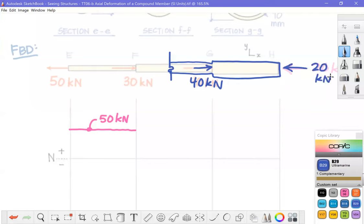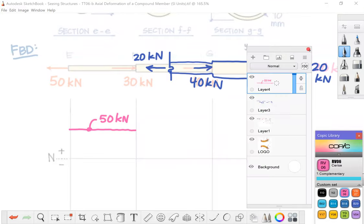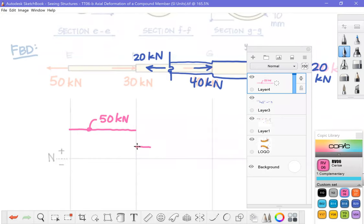And by inspection, in order to put this in equilibrium, I need 20 more pointing to the left in order for the sum of forces on this free body to be zero and keep it in static equilibrium. 20 kilonewtons, arrows pointing away from the body, that is a tension force. So let us plot that on the tension side of things out here.